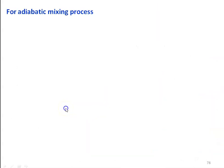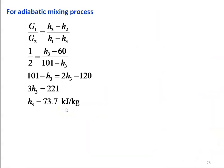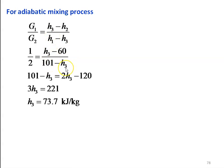For the adiabatic mixing process, we have the ratio G1/G2 = (H3 − H2) / (H1 − H3). G1 = 1 kg, G2 = 2 kg, H3 is the unknown. Substituting: 1/2 = (H3 − 60) / (101 − H3). Solving this equation, H3 = 73.7 kJ/kg.